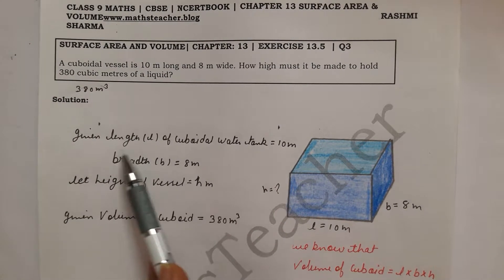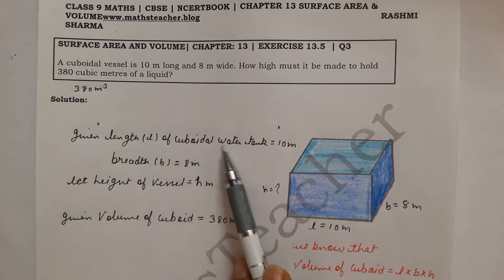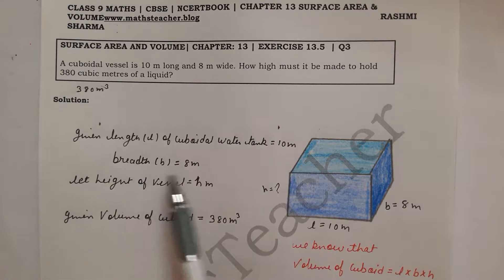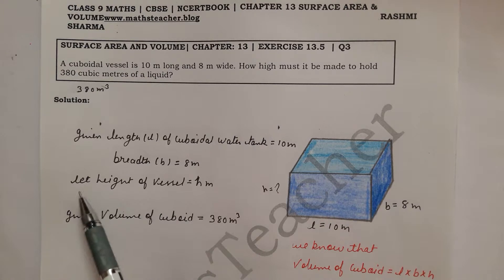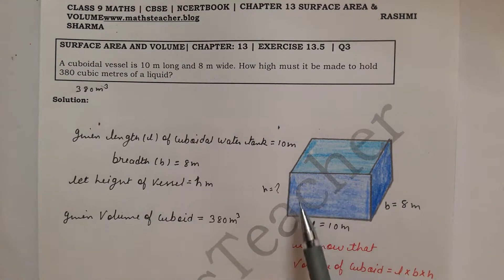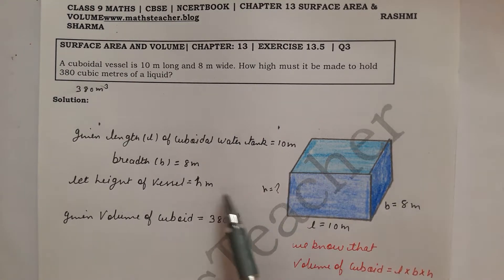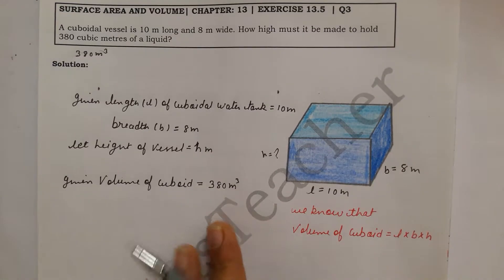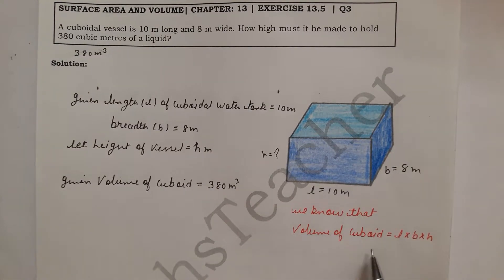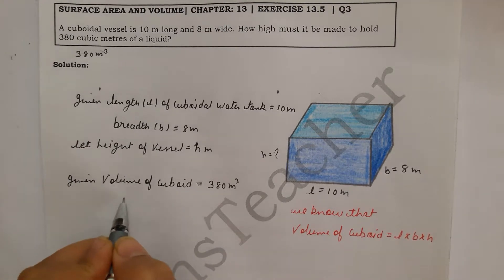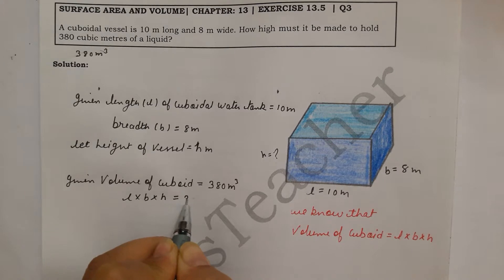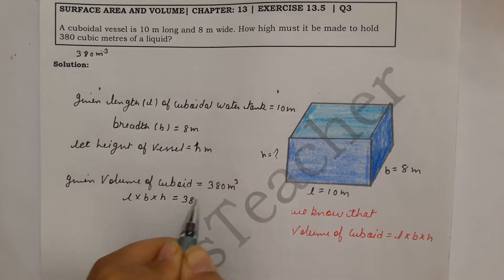So, given: length L of the cuboidal water vessel is 10 meters, breadth is 8 meters, and height is h meters. Then, using the volume formula: Volume equals L into b into h. So we write L into b into h equal to 380 cubic meters.